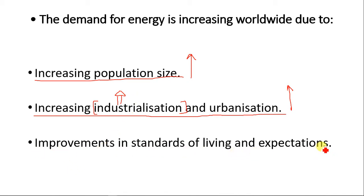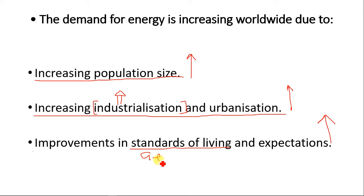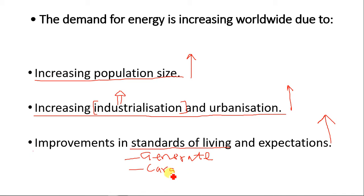Improvement in the standard of living and expectations also drives energy demand. If the standard of living of an individual improves, they tend to consume more energy. For example, in most developing economies, if the standard of living of a particular family increases, most of them will begin to get things like a generator for personal electricity — making high use of fossil fuels. They'll also begin to get personal cars, family cars, and some families can get more than one. All these increase the use of energy. So: increase in population, increase in industrialization and urbanization, and improvement in standard of living all increase energy consumption.